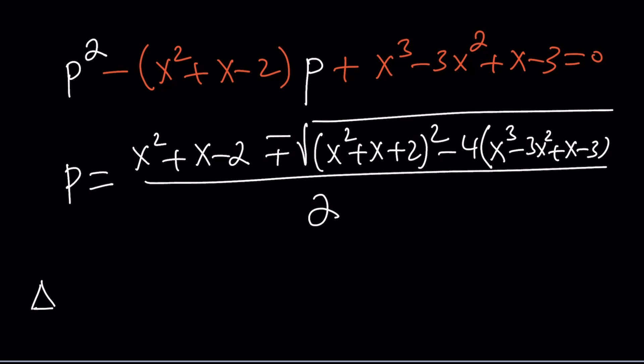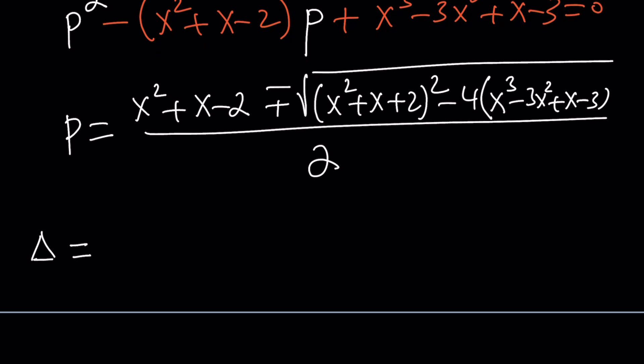Delta, which is a Greek letter, looks like a triangle. Now I can go ahead and isolate it, because let's simplify the discriminant first and then we can just plug it in. It's a lot easier instead of writing this gigantic radical every time.